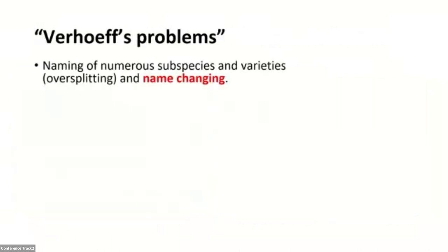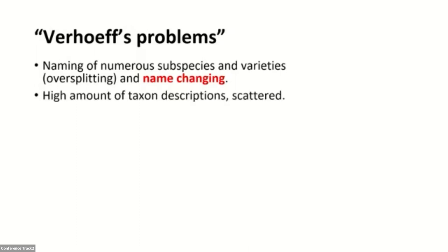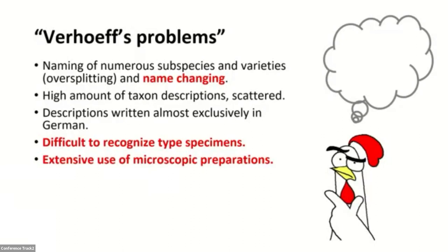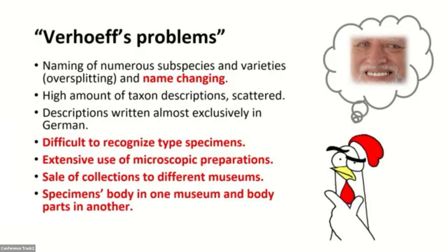There are a number of what we call Ferhoff's problems, like him naming numerous species, subspecies, and varieties which have no standing in nomenclature nowadays — what we call over-splitting — and also name-changing from the time he sold the specimens until the time he actually published the names. There is a high amount of taxon descriptions scattered across several hundreds of locations. The descriptions were written almost exclusively in German, which many people don't speak today. It is very difficult to recognize type specimens because of incomplete labels. He also made extensive use of micro preparations for anatomy. He sold his collections to many different museums, some of which don't exist anymore, and the specimen's body might be in one museum while the body parts are in another.